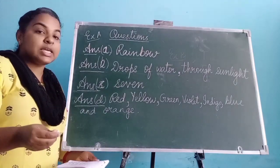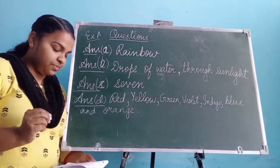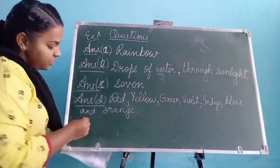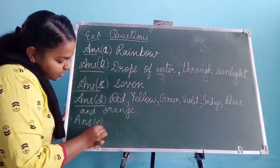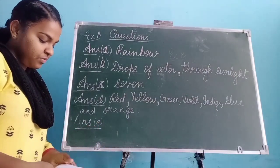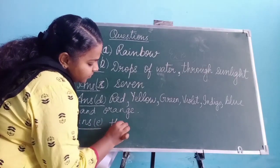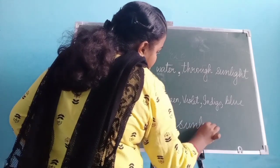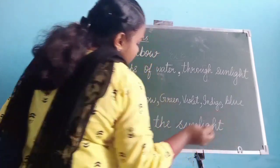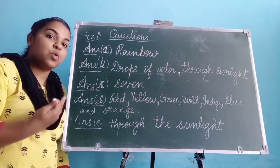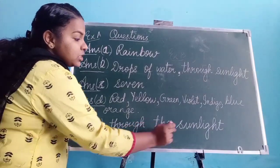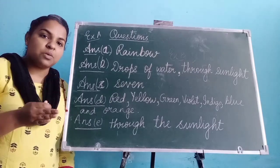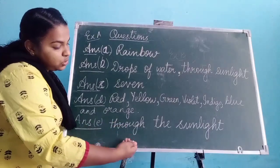Now Exercise E, question E: when do you see the rainbow? The answer is through the sunlight. Whenever rain is coming, as soon as the rain stops and the sun comes, we can see the rainbow. That's why the answer is 'through the sunlight.'